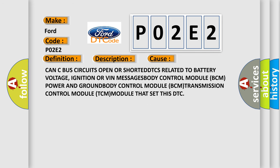This diagnostic error occurs most often in these cases: CAN C bus circuits open or shorted, DTCs related to battery voltage, ignition or VIN messages, body control module BCM power and ground, body control module BCM, transmission control module TCM, module that set this DTC.